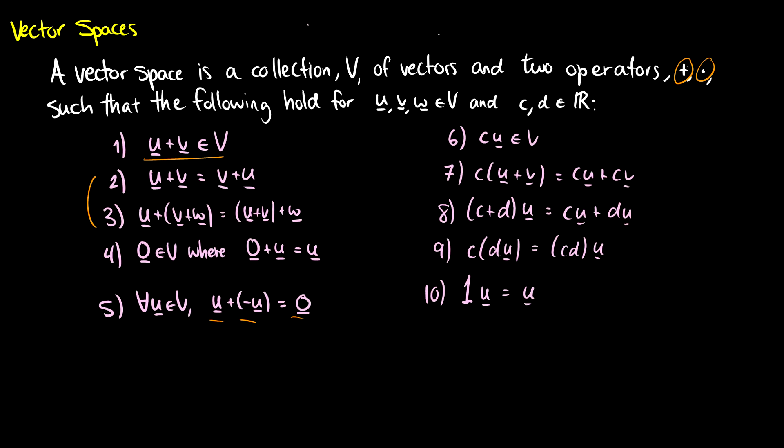If we multiply c times du, it should be the same as cd times u. And of course, we have our identity, so one times the vector u should be the vector u.